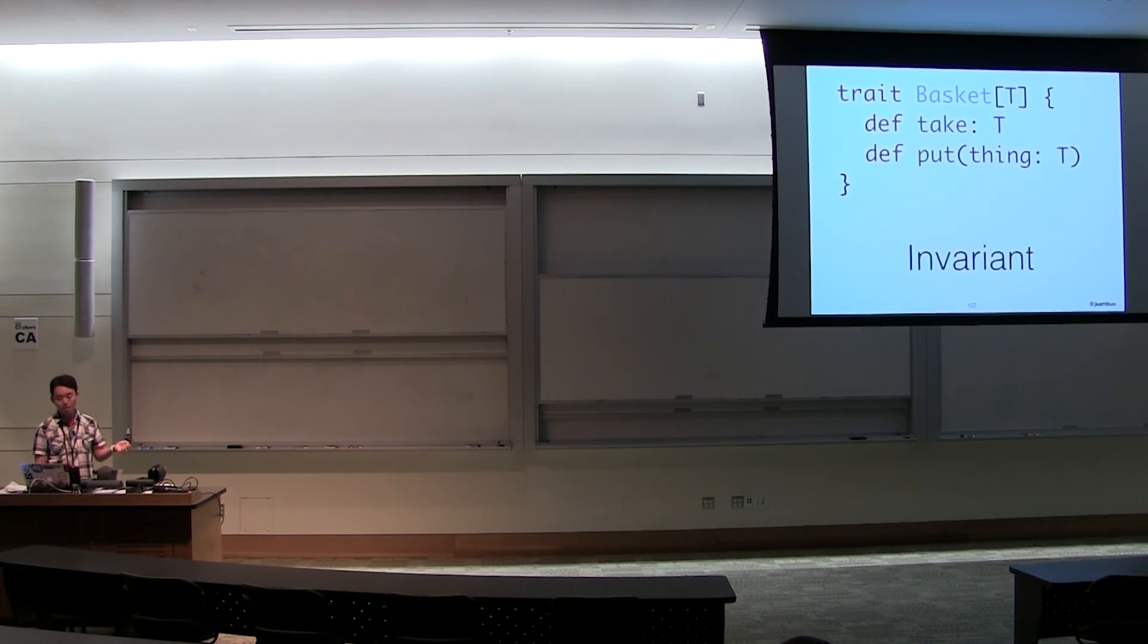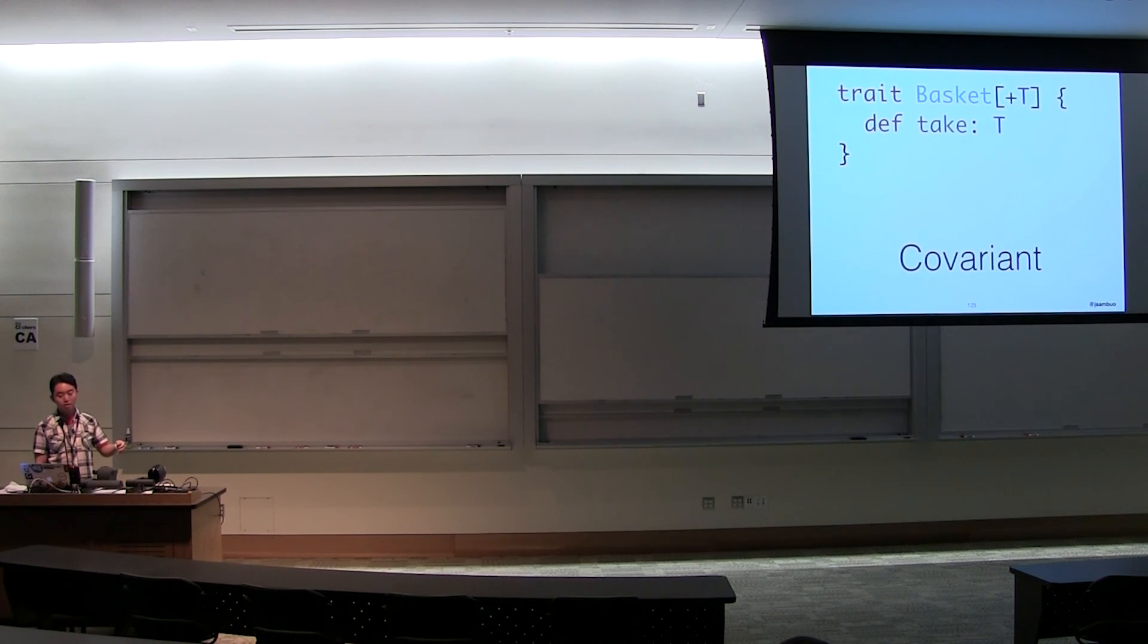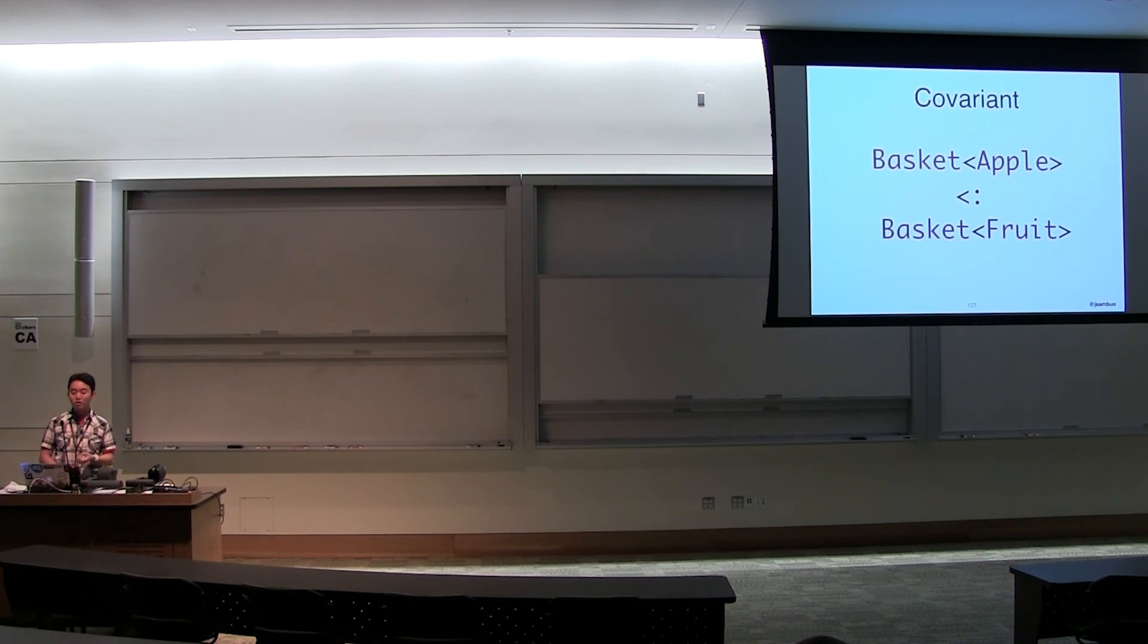Scala behaves in the same way. Here's the similar generic basket in Scala with the get and put method. To make it read-only, we'll mark it as covariant by using plus. If we don't remove put, the compiler will say covariant type T occurs in contravariant position in type T of value thing. Of course, that's because we're using T in a contravariant position. If we remove the put, then everything will be fine and we have our read-only basket. For the write-only basket, we'll use minus to mark it as contravariant and remove the get method. Now we can only put things into the basket. Because we've marked the basket as covariant or contravariant, we can treat the basket of apples as a basket of fruits if it's covariant. And we can treat the basket of fruits as a basket of apples if it's contravariant.